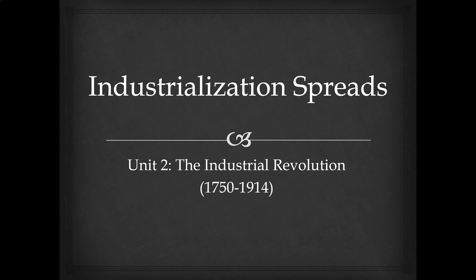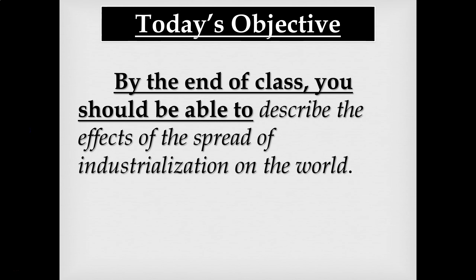Welcome back. We are on Unit 2, the Industrial Revolution. Our topic for this video is industrialization spreads. In our last video we talked about some of the causes of the Industrial Revolution and why it began in Britain — they had natural resources, a stable government, entrepreneurs, capital to invest, trade routes, and colonies. We also looked at transportation changes like the steamboat, steam engine, and steam locomotive.